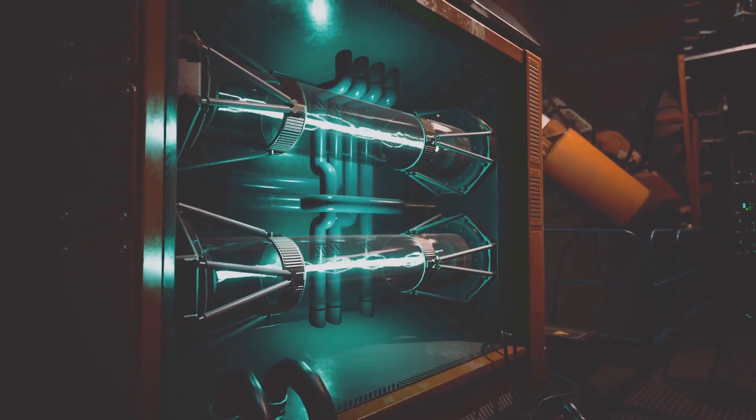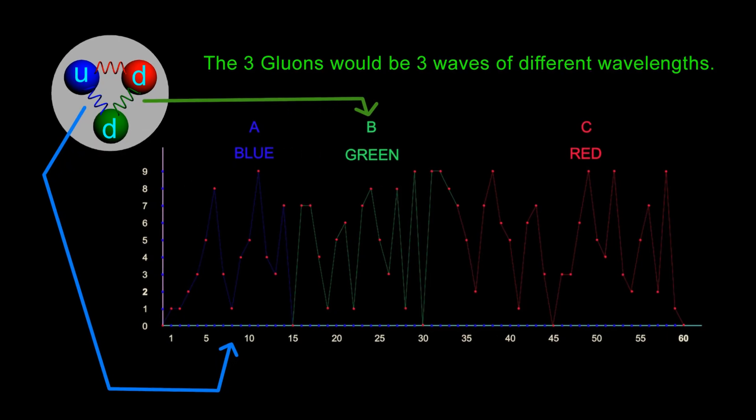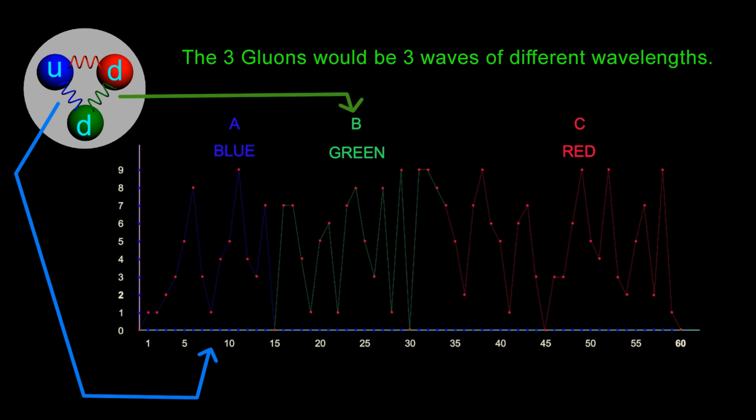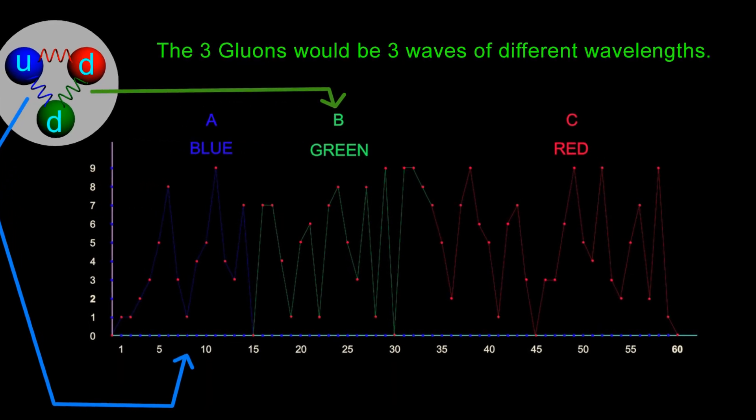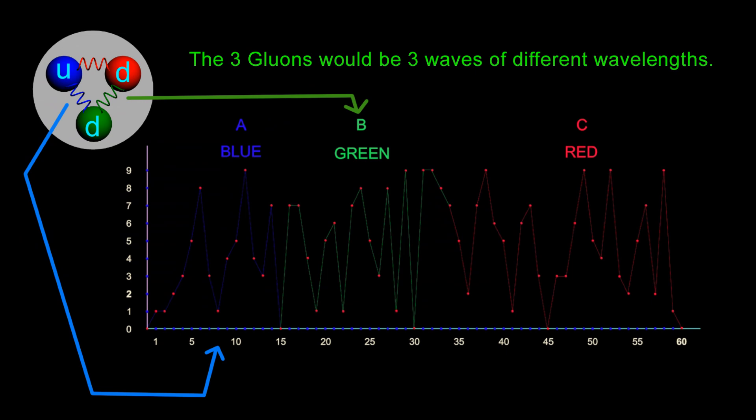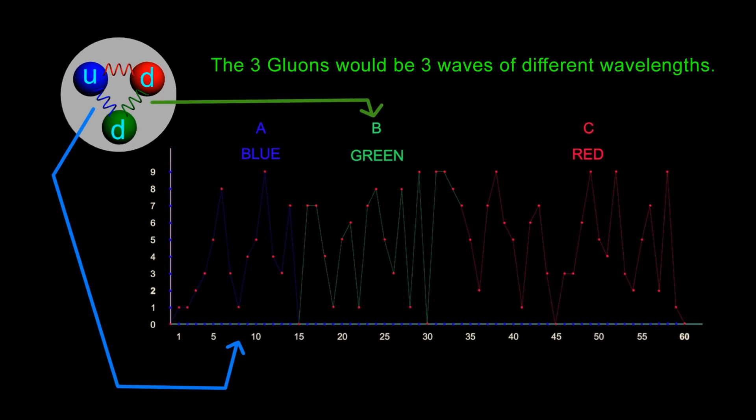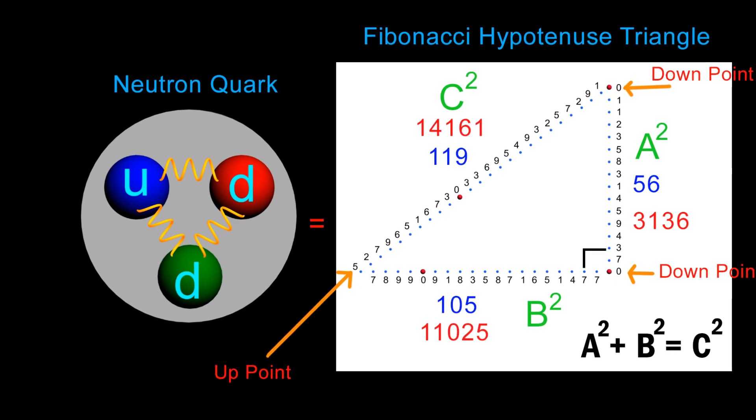I believe that when science is ready to listen, they will be able to decode the binding energy for quark-gluon fields using the Fibonacci 60-digit hypotenuse triangle. This could lead to new fields of scientific study.